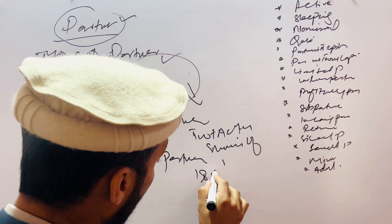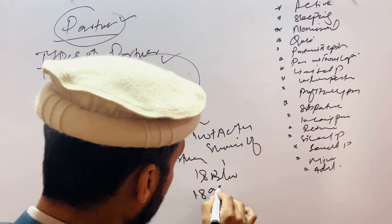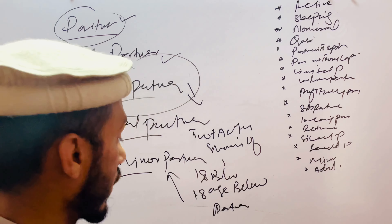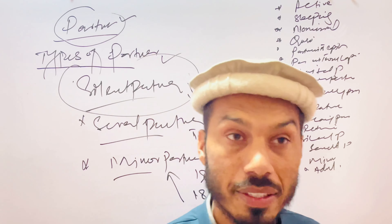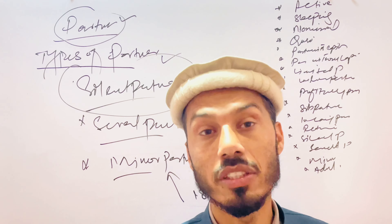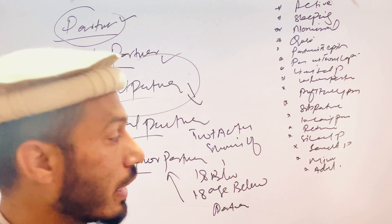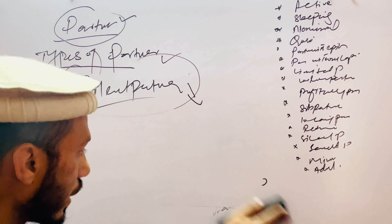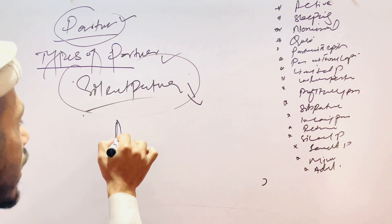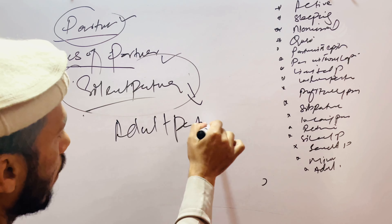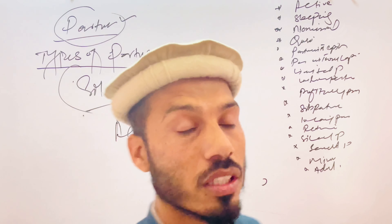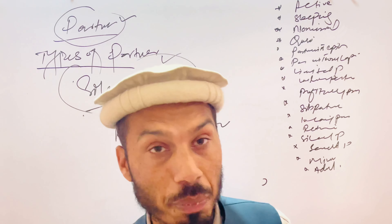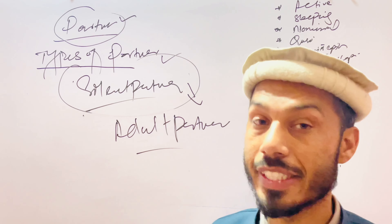The next type is the minor partner. Minor partners are those partners whose age is below 18 years. This is called a minor partner. The other type is the adult partner — adult partners are those whose age is above 18 years. This is called an adult partner.